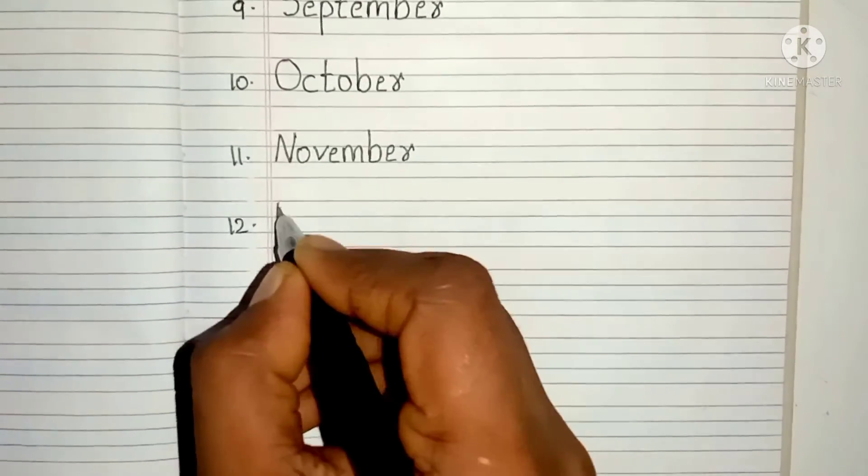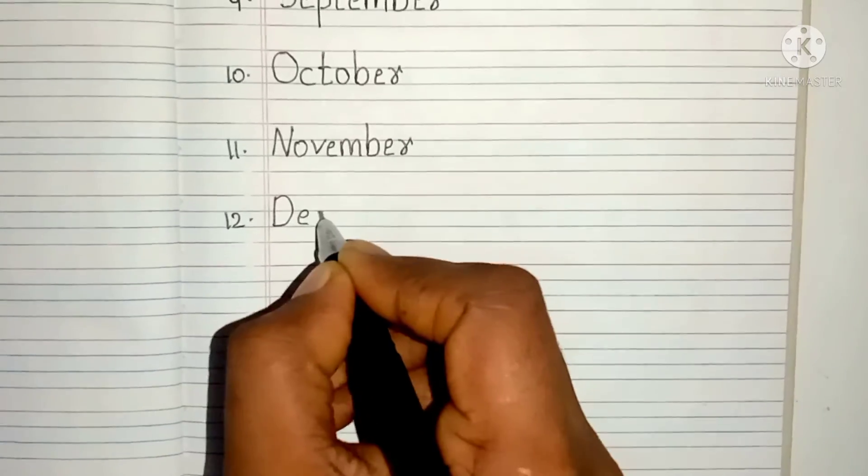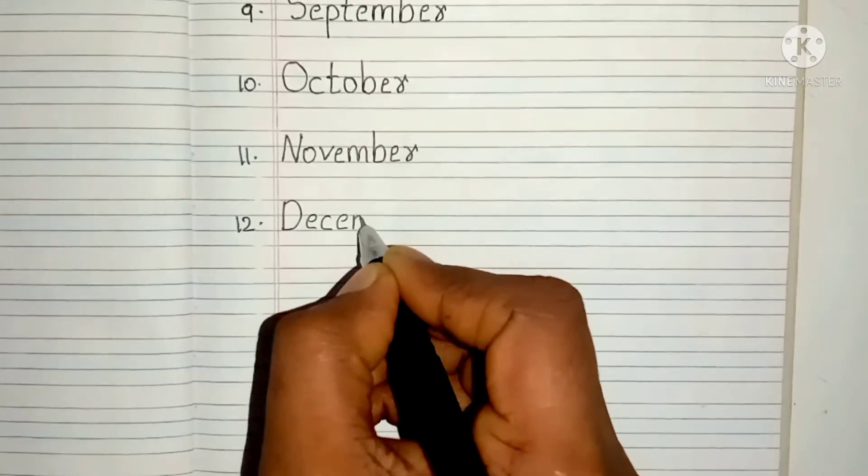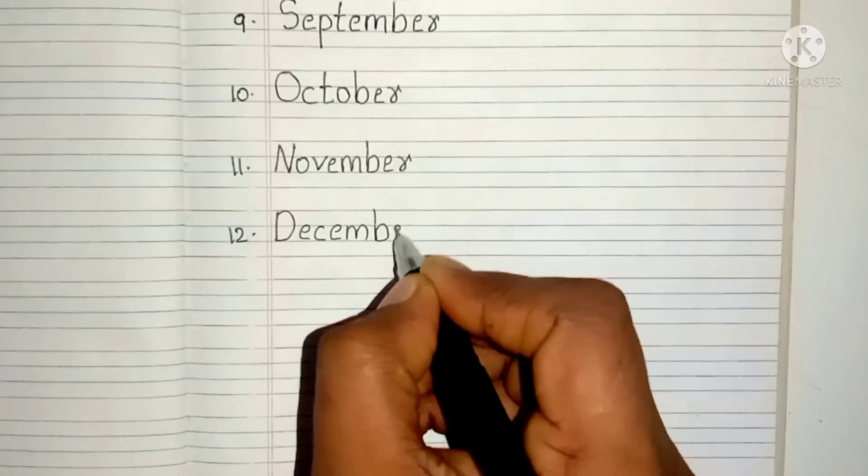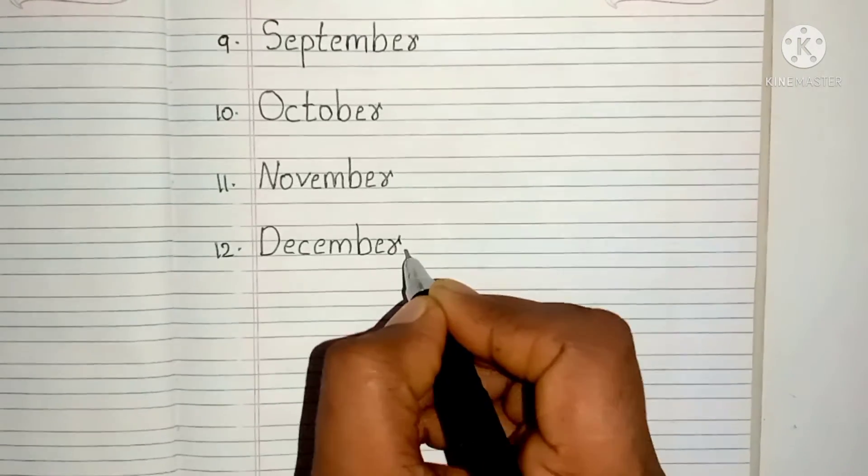Twelfth month is D, E, C, E, M, B, E, R. December.